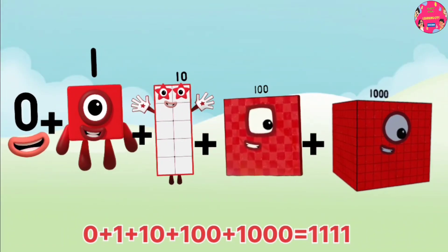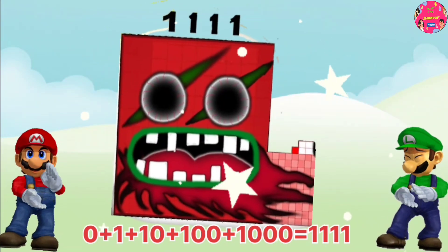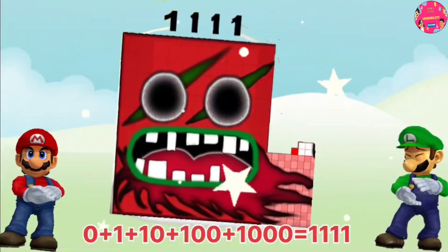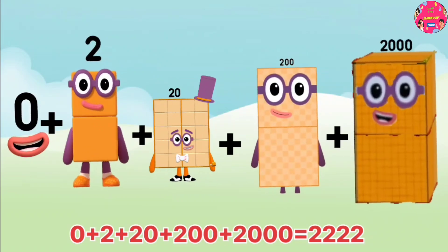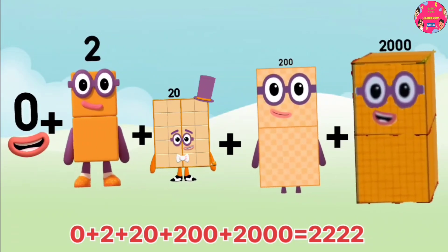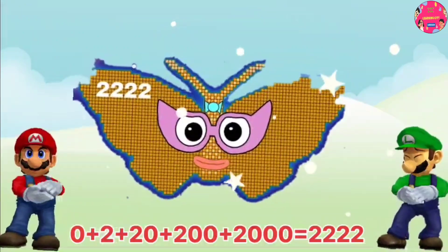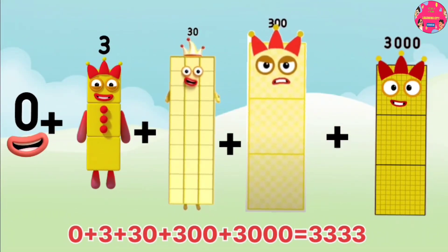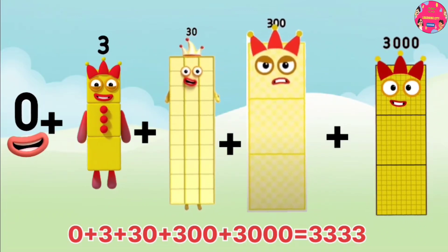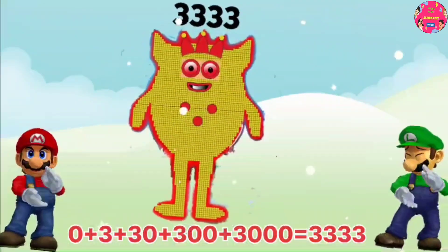0 plus 1 plus 10 plus 100 plus 1,000 equals 1,111. 0 plus 2 plus 20 plus 200 plus 2,000 equals 2,222. 0 plus 3 plus 30 plus 300 plus 3,000 equals 3,333.